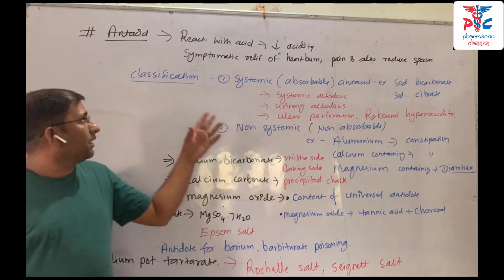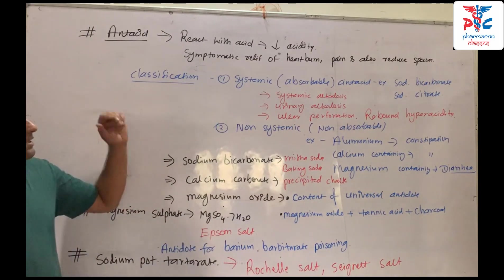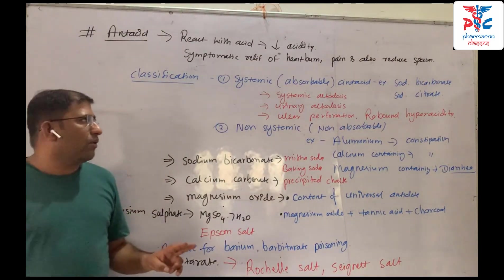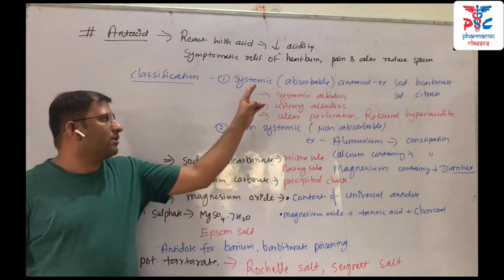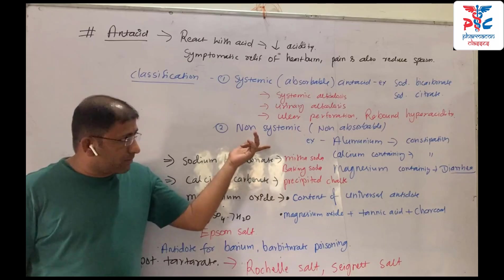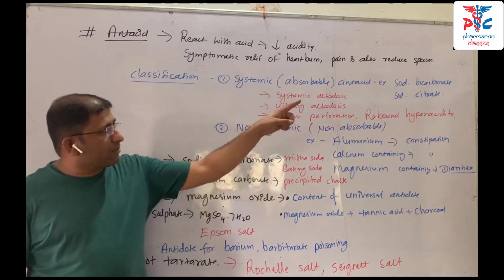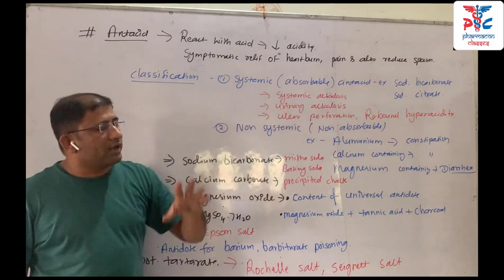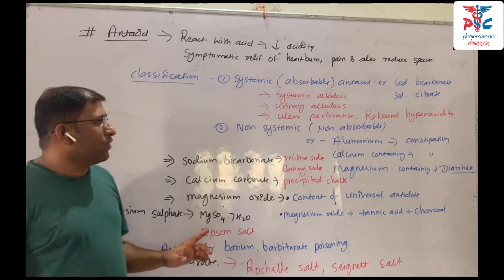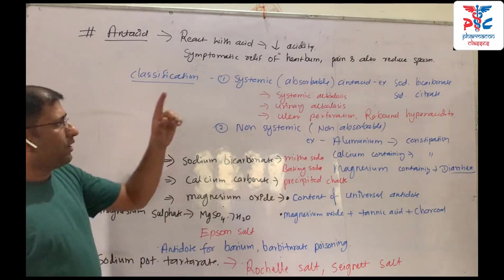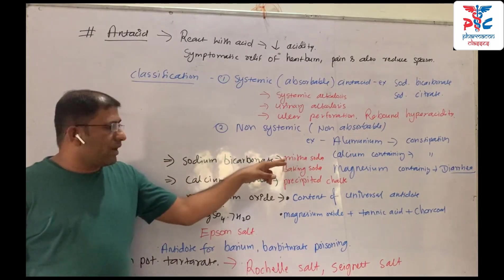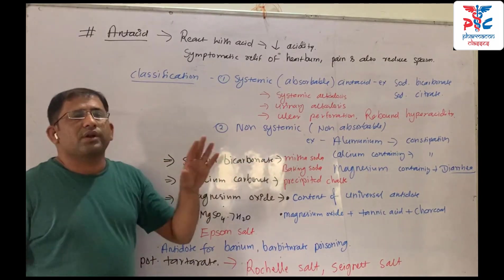To summarize the antacid classification: there are two types — systemic and non-systemic. The systemic example is sodium bicarbonate, also known as baking soda.